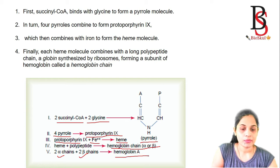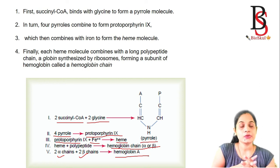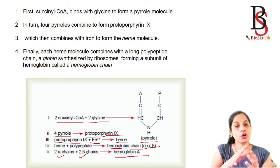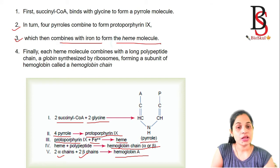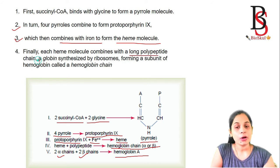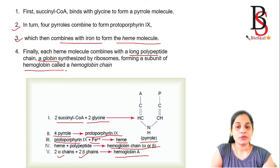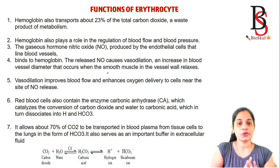The heme molecule then combines with a long polypeptide chain to form hemoglobin. The polypeptide chain is composed of two alpha chains and two beta chains in hemoglobin type A. Finally, the heme molecule combines with the globin chain synthesized by ribosomes, forming a subunit of hemoglobin.